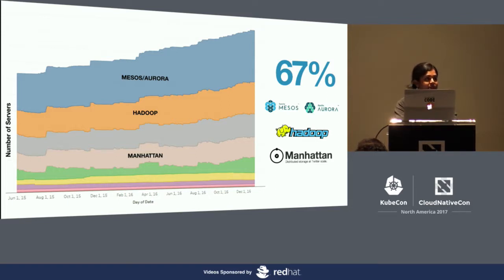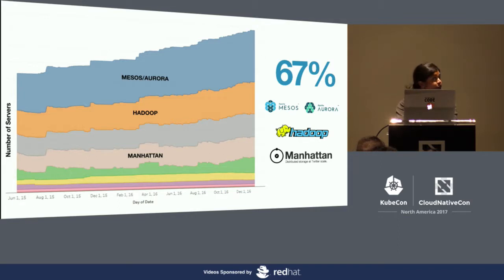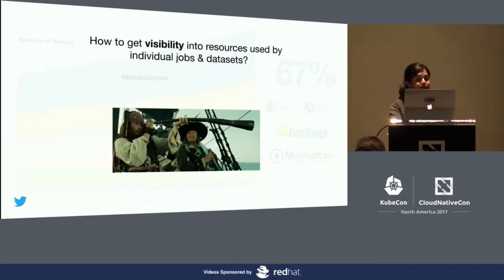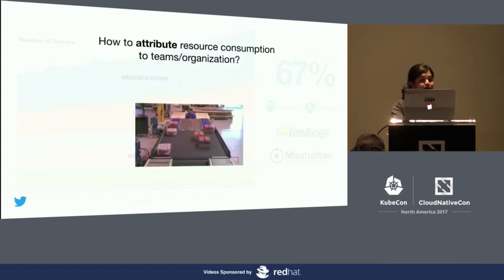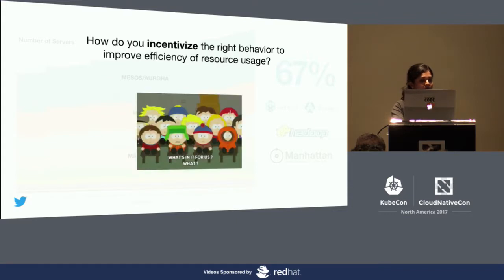It shouldn't be a surprise that these services make up roughly two-thirds of our entire server footprint. Twitter runs in multiple data centers and has hundreds of thousands of servers. Planning capacity for such large services is a challenge by itself. Given the footprint and complexity around multi-tenancy, we started asking ourselves: how to get visibility into the footprint of individual jobs and data sets within these shared platforms?